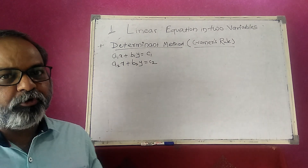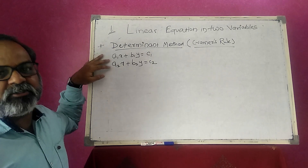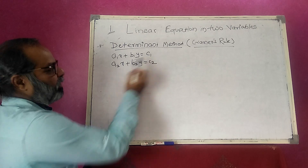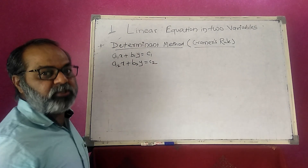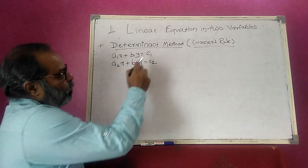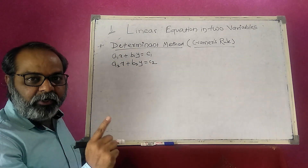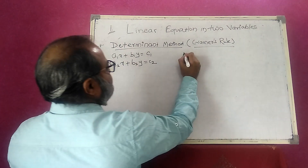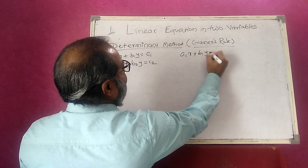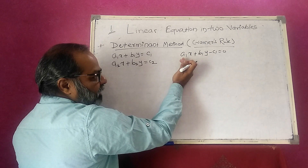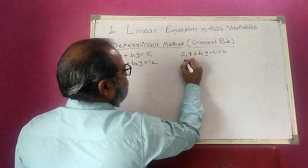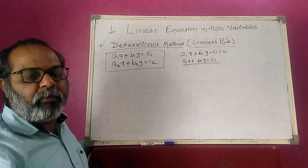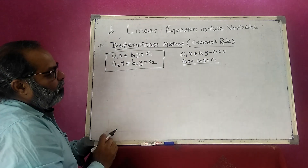Now going to deal with Cramer's Rule. We write two linear simultaneous equations — simultaneous means two or more equations taken together. The standard form is: a₁x + b₁y = c₁ and a₂x + b₂y = c₂. One important thing to remember: the constant must be on the right-hand side of the equation. This is the standard form required to solve by Cramer's Rule.